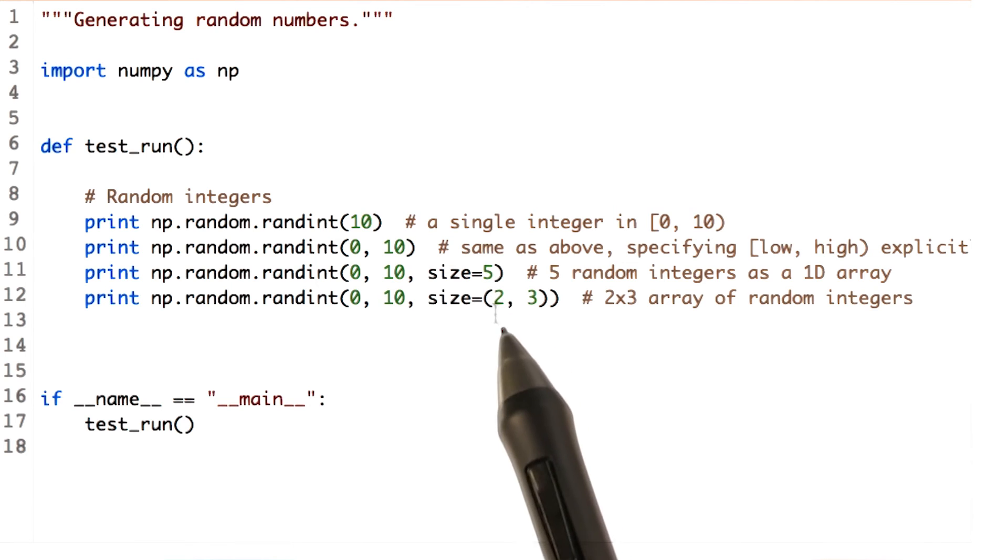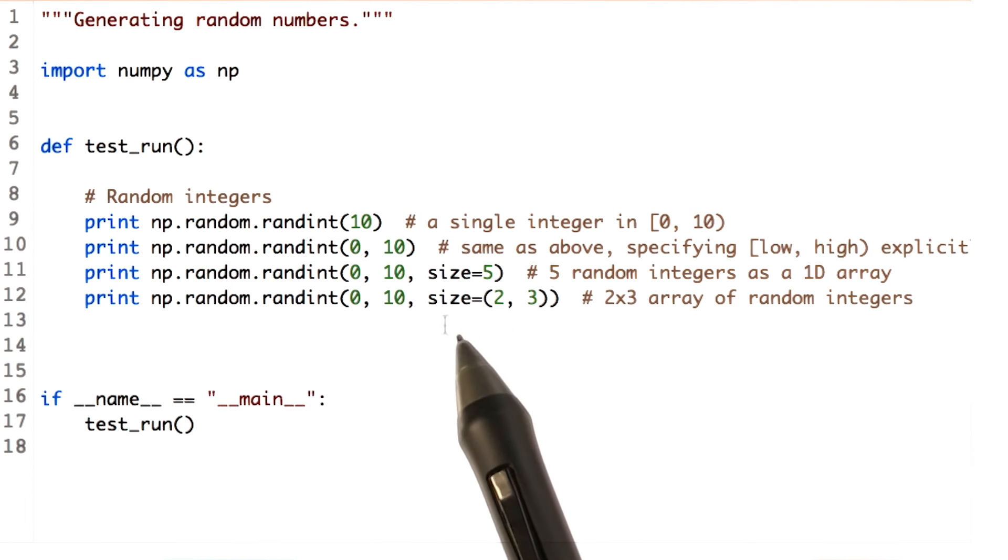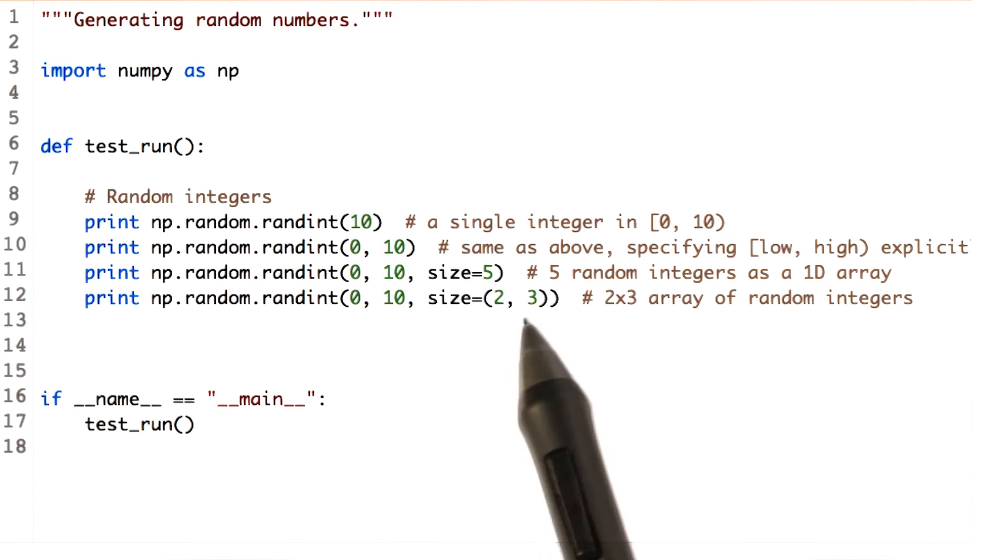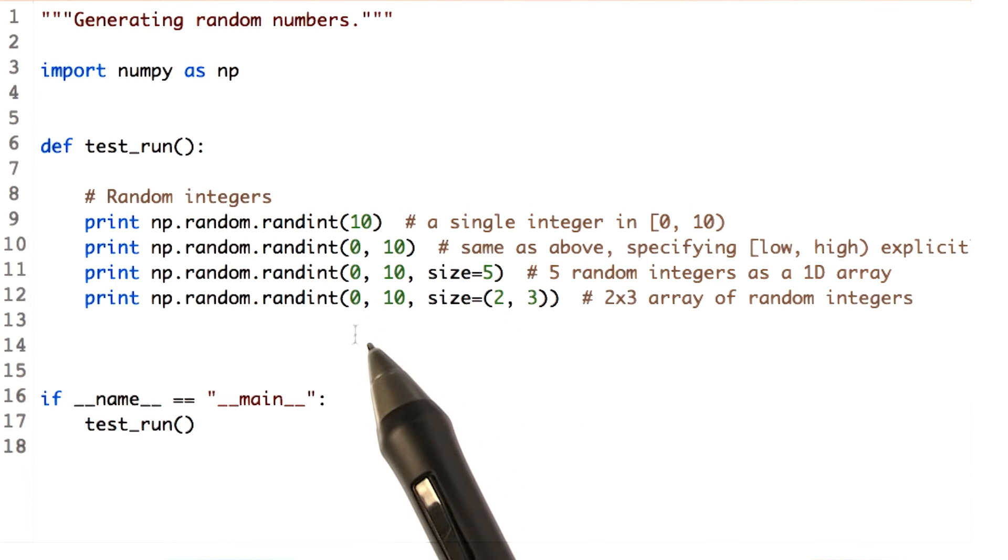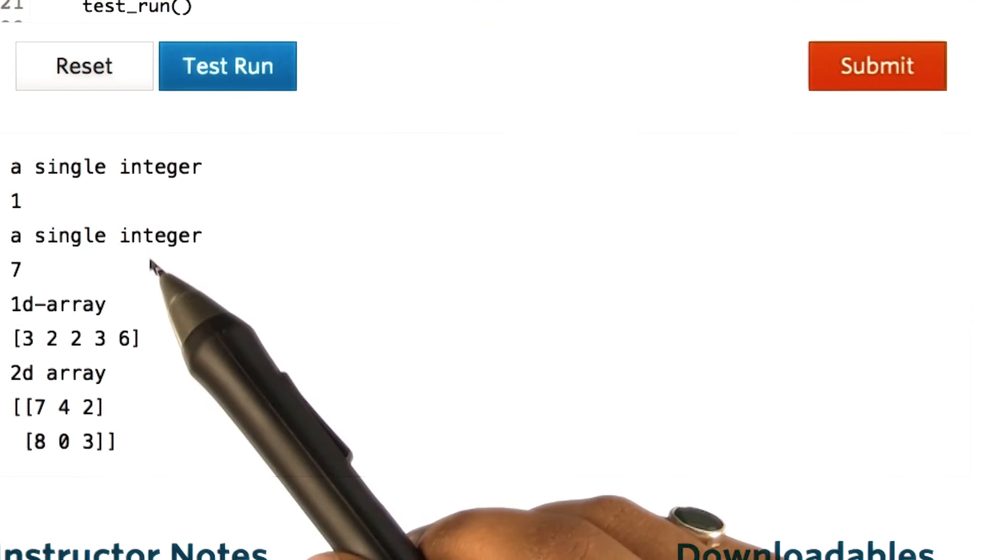Going forward, we can pass a tuple value to the attribute size, which will create a 2D array with all values between the range 0 and 10. Now let's see the output. These are the single random integers between the range 0 and 10.